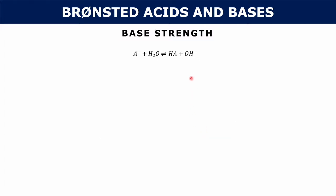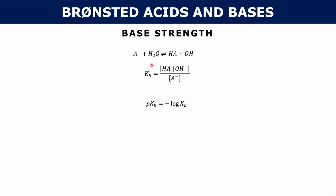It's the same for bases. In a base reaction, you have A- reacting with water to produce HA and hydroxide. Your Kb is the concentration of HA times hydroxide over A-. Your pKb is the negative log of Kb. Weak bases are going to have low Kb values, which corresponds to high pKb values, and vice versa — exactly the same as Ka.